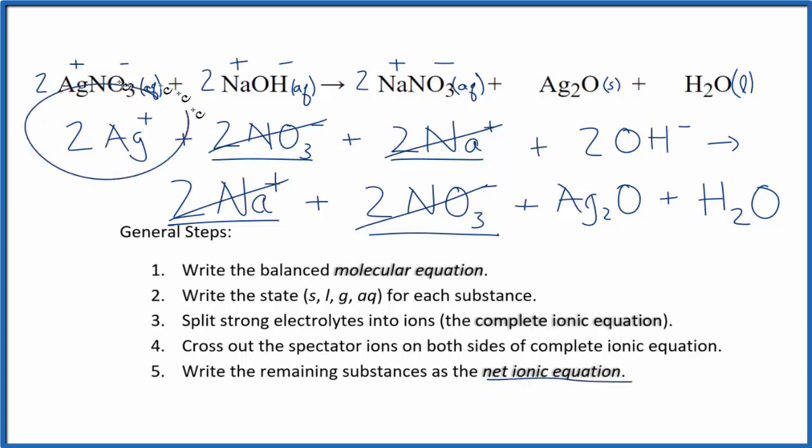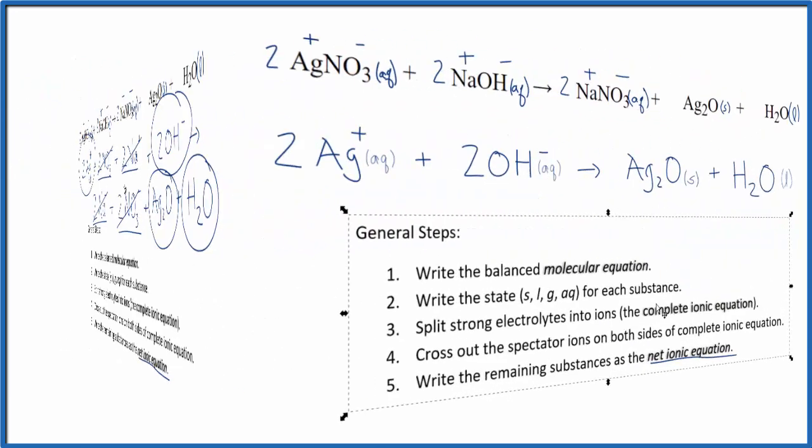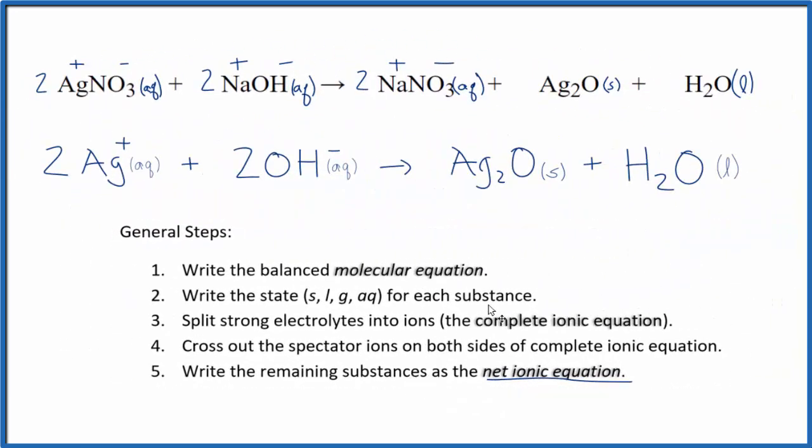So we have two silver ions plus two hydroxide ions gives us Ag2O, silver oxide, plus water. Let me clean it up, add the states in, and then we'll have a nice tidy net ionic equation for AgNO3 plus NaOH. And this is the net ionic equation for silver nitrate plus sodium hydroxide.